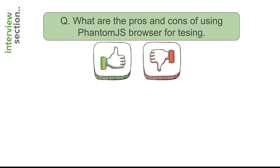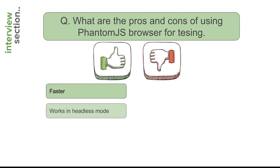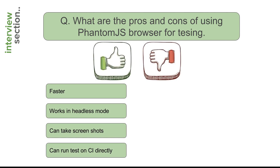Let us look at some pros and cons of using the PhantomJS browser. One major advantage is that because there is no UI, this browser is very fast, so testing is faster than with regular browsers. It works in headless mode, so nothing appears on screen. It can take screenshots, which is a great advantage because other headless browsers like the HTMLUnitDriver do not have this facility. You can also run your tests on a continuous integration system.